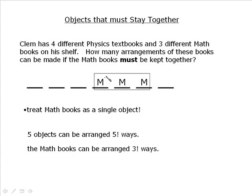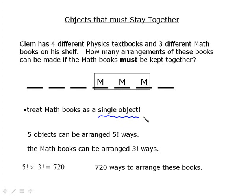And then the math books amongst themselves. So don't forget that they can be shuffled amongst themselves, you know, to whichever position. They are three different math books, so they're not like identical objects. And then finally to finish that off, five factorial times three factorial, which will give you seven hundred and twenty ways to arrange these. So that is always the method. You treat the objects that are to stay together as a single object.